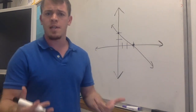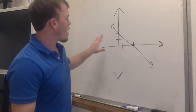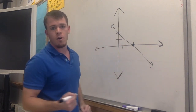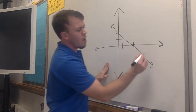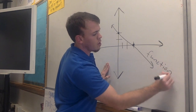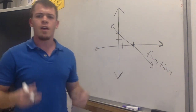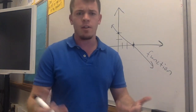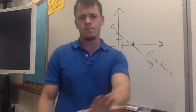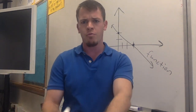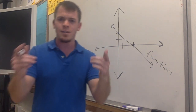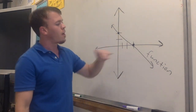Let's look at our first example. We have this graph right here, and this line is going to represent our function. I want you to think for a second — do you think this is a linear function or a quadratic function? And yes, you're absolutely right. It is a linear function.